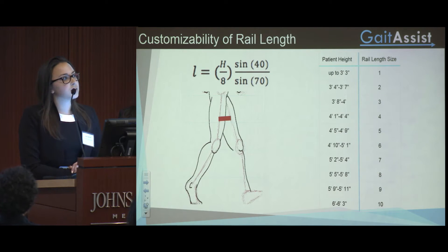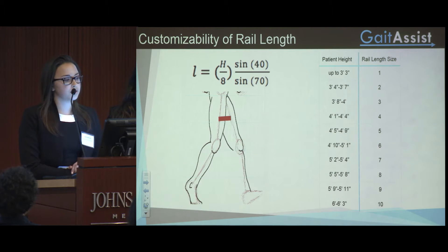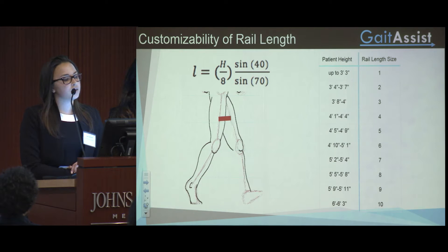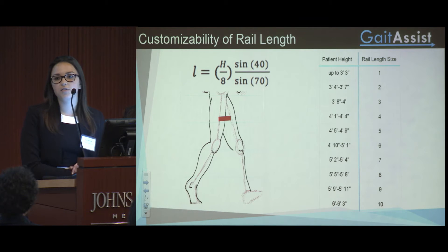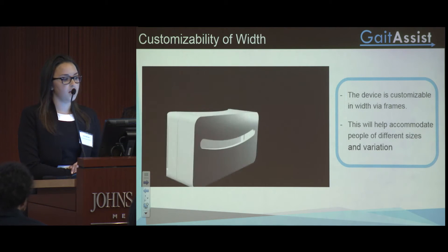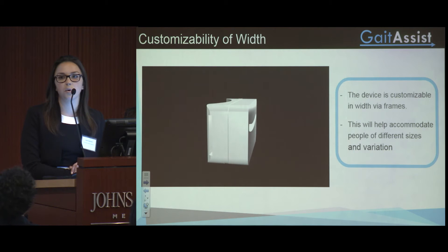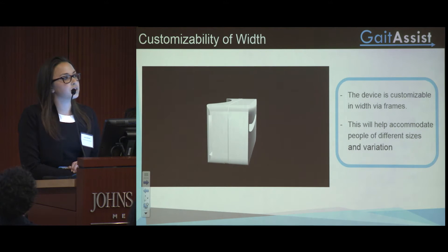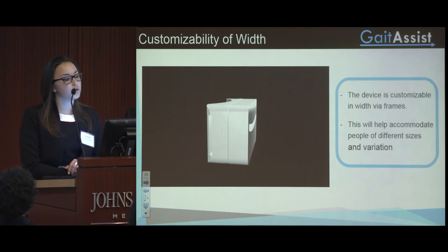It's very important that we are able to customize this device to a wide range of patients, ranging from young children through adults. The first aspect of customization is the rail length, which determines the maximum stride that a patient can have. Based off of a patient's height, we are able to determine their ideal rail length and fit them accordingly. Additionally, we are customizing the width using insertable blocks to make the device wider. This is extremely important because if a device is too wide, it hinders the patient's ability to walk. If a device is too thin, it does not mitigate the effects of scissor gait effectively.